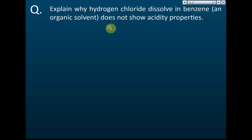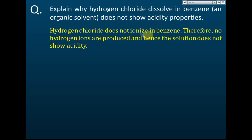When hydrogen chloride dissolves in benzene, it does not show acidity — the pH is 7, it's not corrosive, does not react with carbonates or metals, and shows none of the acidic properties. This is because it will not ionize in benzene and therefore no hydrogen ions are produced. Hydrogen chloride does not ionize in benzene, hence no hydrogen ions are produced, and therefore the solution does not show acidity.